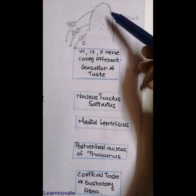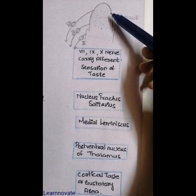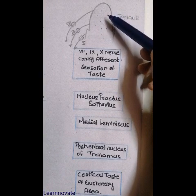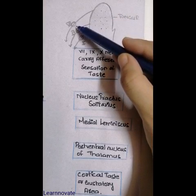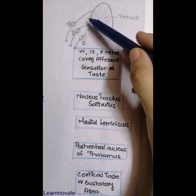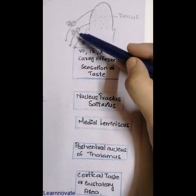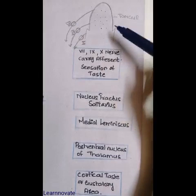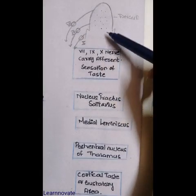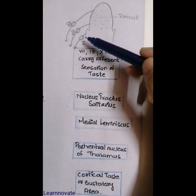When a taste sensation occurs, the stimulus from the anterior part of the tongue is carried through the facial nerve by the lingual branch. From the posterior part of the tongue it is carried through the glossopharyngeal nerve, and from the lateral or epiglottic area it is carried through the vagus nerve.